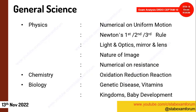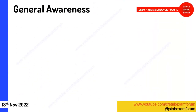Overall for physics: some numericals on uniform motion came, and you can prepare Newton's laws. Focus on light and optics — two to three questions are coming from this section. Check all formulas for calculating resistance. Oxidation and reduction has come in all shifts so far. From biology, questions on genetic diseases, vitamins, kingdoms, and baby development came, though students were not always able to relay the questions clearly.